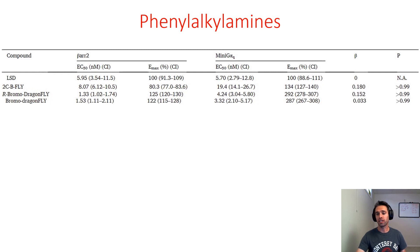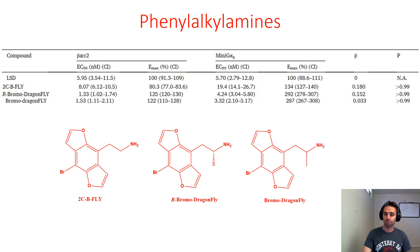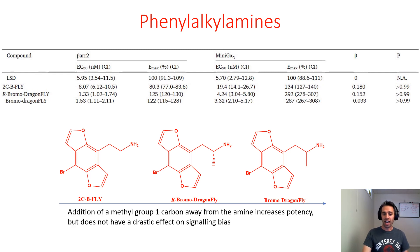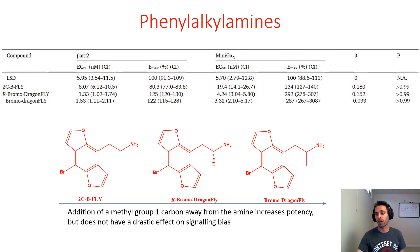Basically the same applies for the G protein pathway, where potency is increased by about five-fold and the Emax also increases. Structurally, the addition of a methyl group one carbon away from the amine increases potency — that's shown to be true. But this does not seem to have a drastic effect on signaling bias, as we can see from the beta factor values: 0.180 for 2CB-fly, 0.152 for R-bromo dragonfly, and 0.0333 for bromo dragonfly. These are very close to zero, indicating they don't have much preference for one pathway over another, though they are slightly beta-arrestin biased.